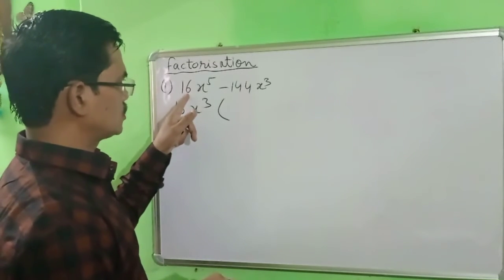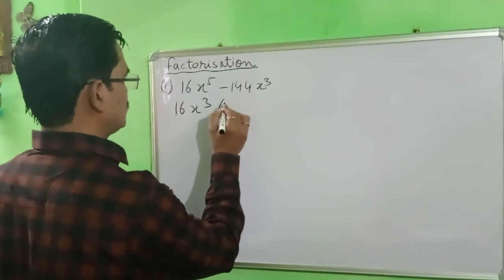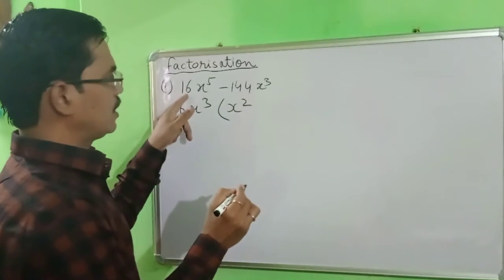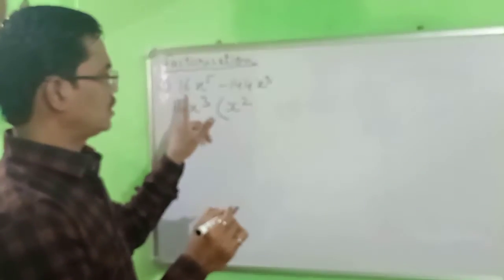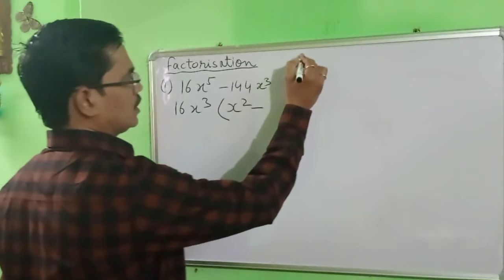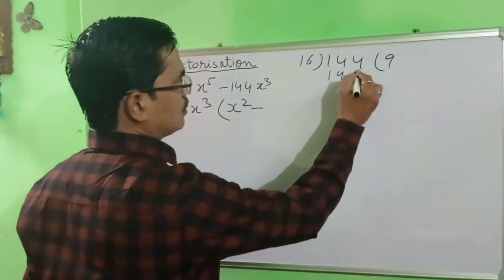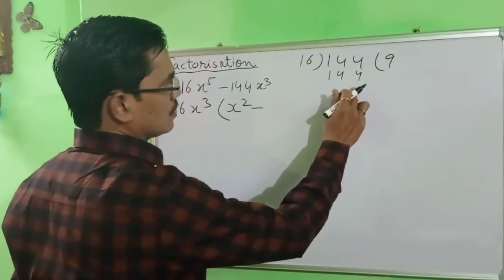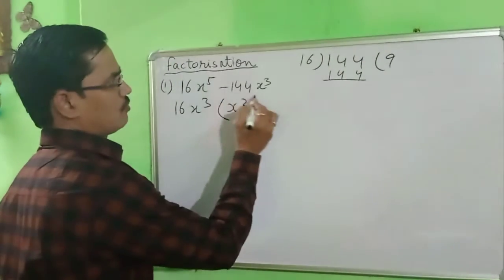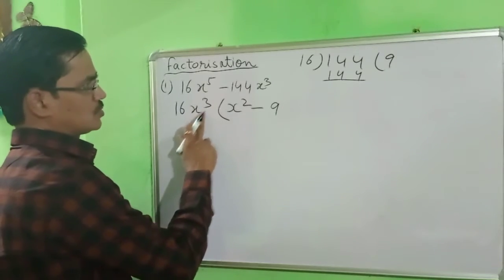So if you divide here, 16x⁵ divided by 16x³ gives x². And 144 divided by 16 gives 9. So after taking 16x³ as common, we are left with x² minus 9.